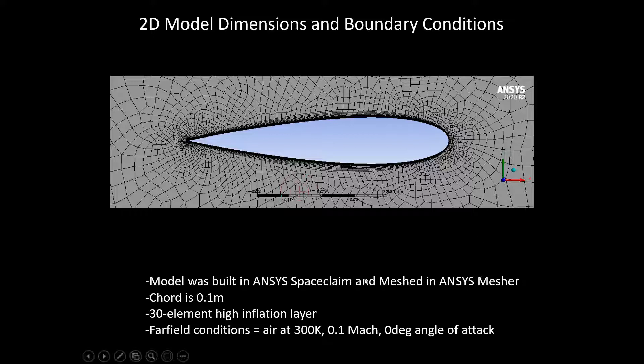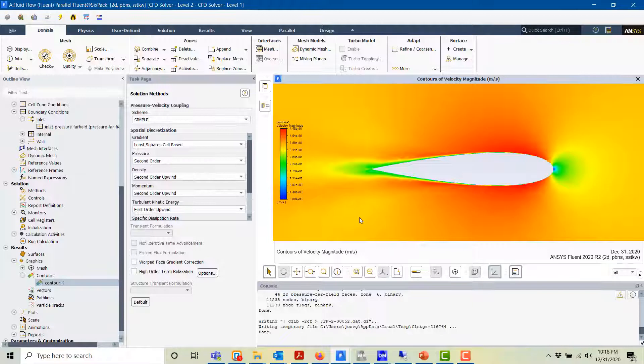The far-field conditions were air at 300 Kelvin, a free-stream Mach number of 0.1, and a zero-degree angle of attack. Now let's look at the model — it has been solved.